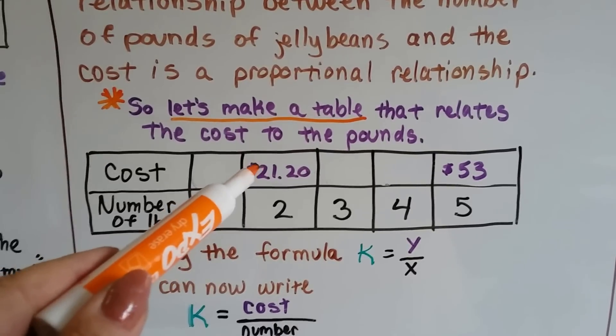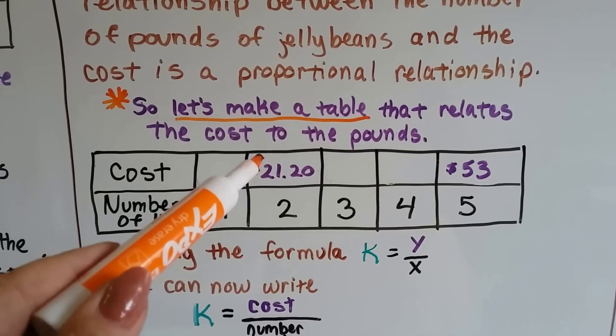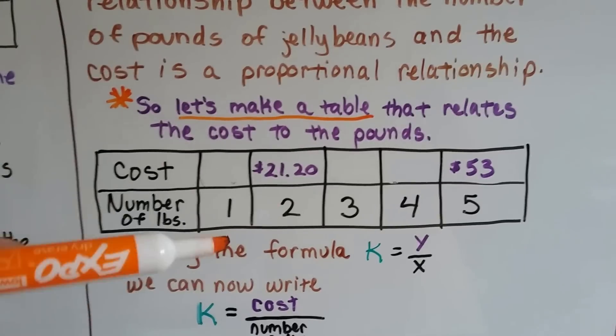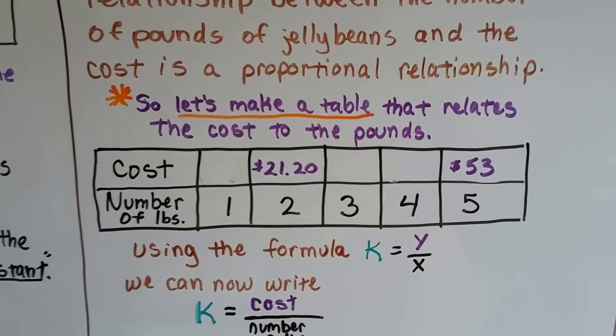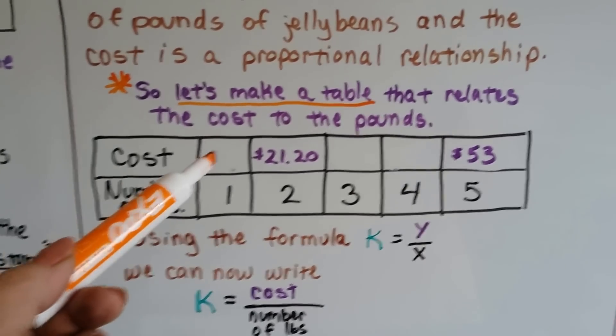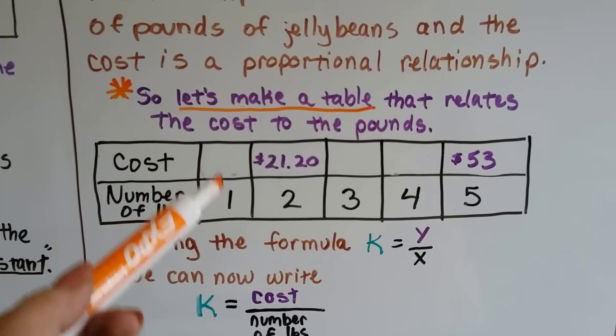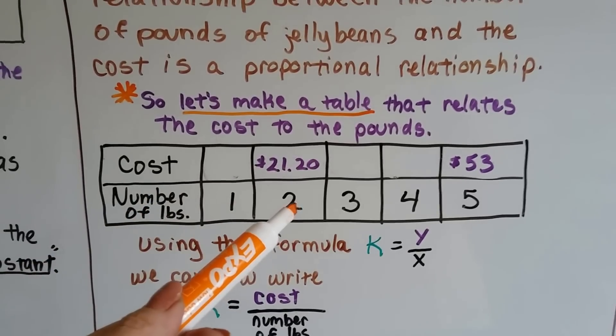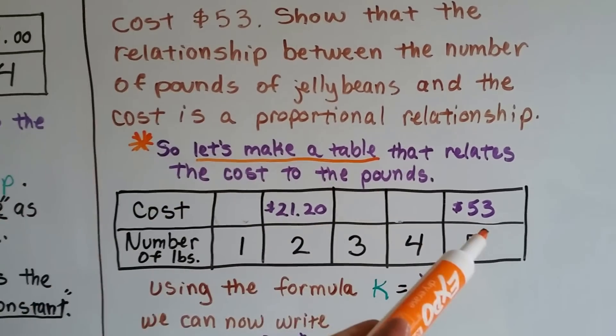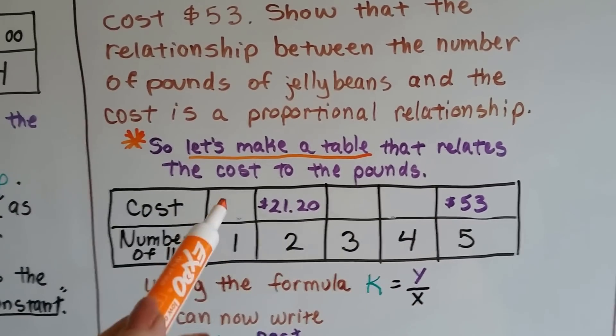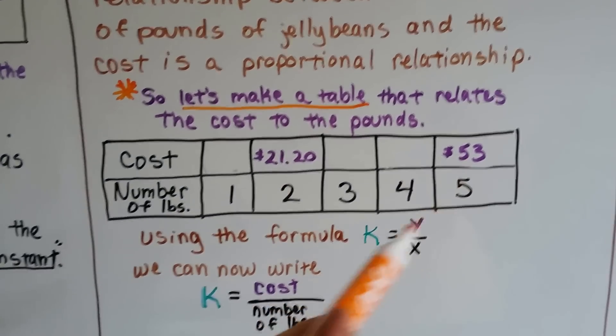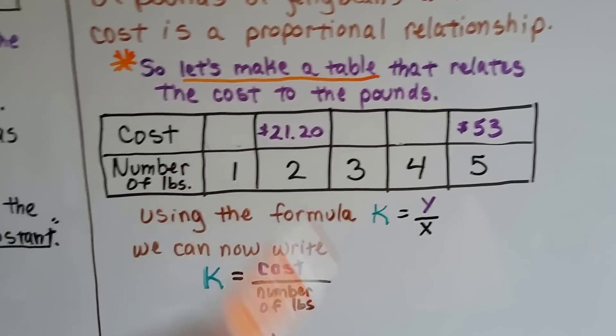The cost of 2 pounds is $21.20 over the number of pounds. And if you write it this way, you're going to end up making your fractions, your ratios, your proportions. We don't know what the cost of 1 is, so I left it blank. I do know the cost of 2 is $21.20, and I know that the cost of 5 is $53. So I left those blank, but I do know these. These are given. And I can use these to help us fill in the blanks on the table.